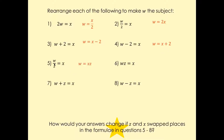Here, times by z on both sides, so w equals xz. Here, divide by z on both sides, so w equals x over z. Here, minus z on both sides, so w is going to be x minus z. And here, the same story again — plus z on both sides, and that's going to give w equals x plus z.